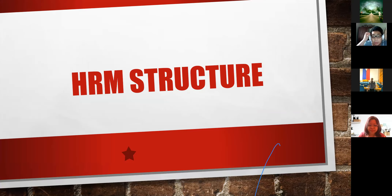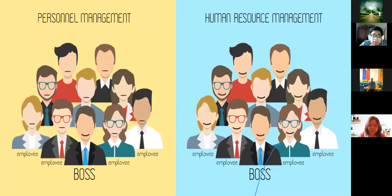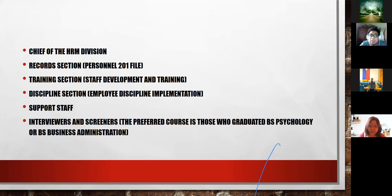Now I'll discuss the structure of HRM. In offices, personnel management and human resources management are technically the same. There is a leader — the director or highest authority figure of that office — and all employees under them. As a sample: first is the chief of the HRM division, who is the final approving body for anything that pertains to an employee. Next is the record section, which handles the personnel 201 file, including IDs, trainings, contracts, and everything.